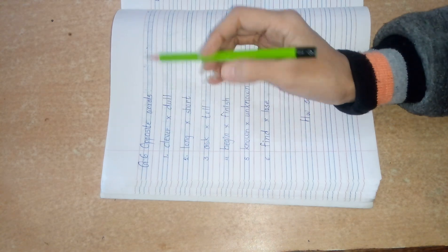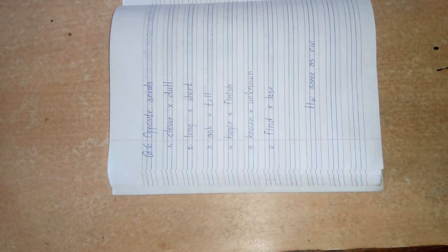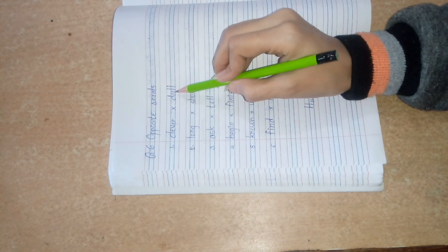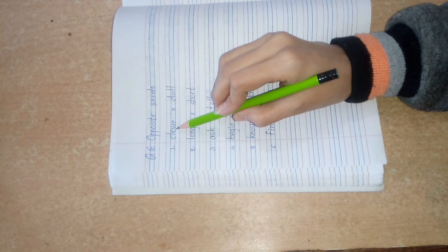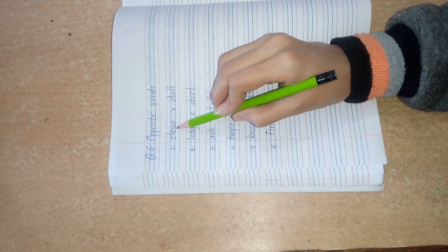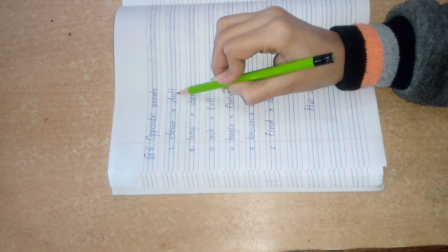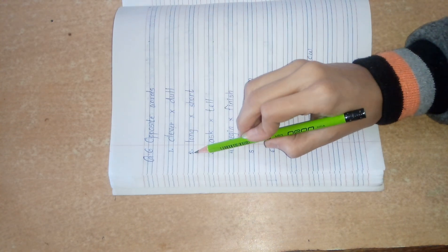Opposite words. 1. Clever, opposite, dull. Clever means very good in studies. Dull means very weak in studies.